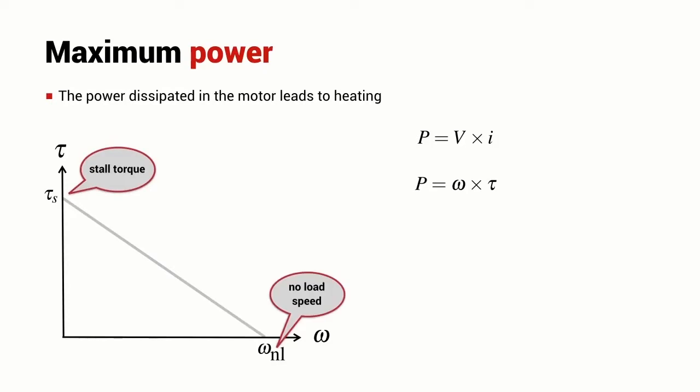One point is when the motor has got no load at all and it's spinning as fast as it possibly can. We refer to this as the no load speed. At the other end of the line, the motor is stalled. It's not actually rotating but it is exerting a torque and we refer to this as the stall torque.